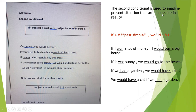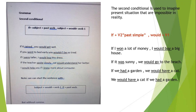The second conditional is used to imagine a present situation that is impossible in reality. The second conditional consists of two parts. The first part with 'if' — we always put verb two. The second part we put 'would' plus verb one. Look at the first example: 'If I had a lot of money, I would buy a big house.'